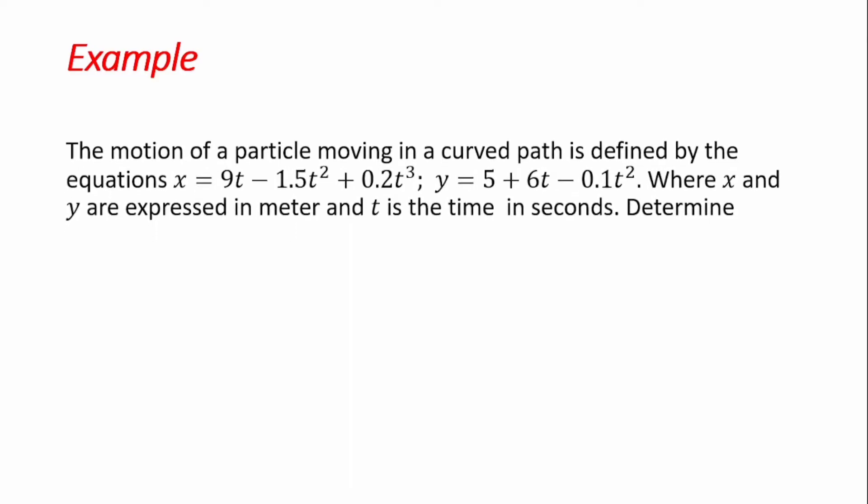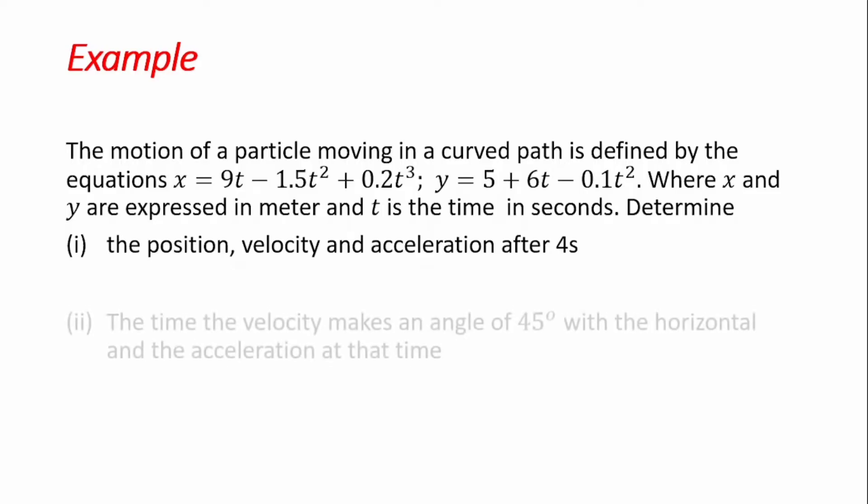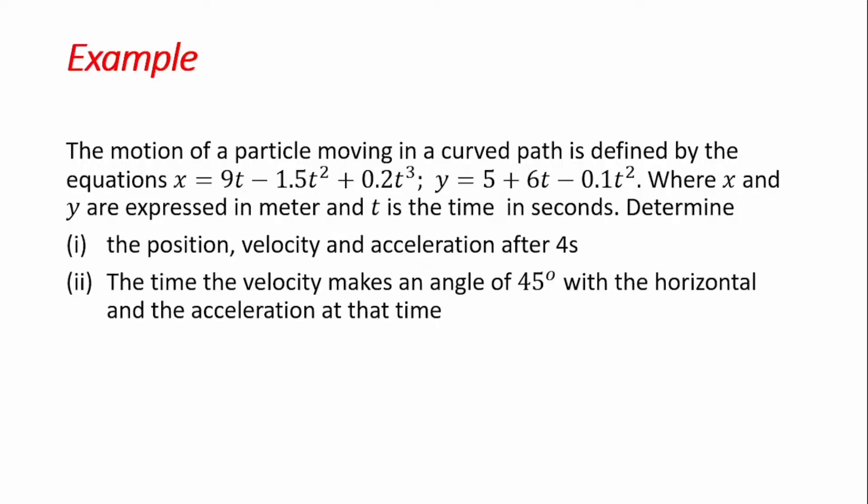We're going to work through this example. The motion of a particle moving in a curved path is defined by the equations x = 90 − 1.5t² + 0.2t³ and y = 5 + 6t − 0.1t², where x and y are in meters and t is time in seconds. We're told to determine: (1) the position, velocity, and acceleration after four seconds, and (2) the time when the velocity makes an angle of 45 degrees with the horizontal, and the acceleration at that time.